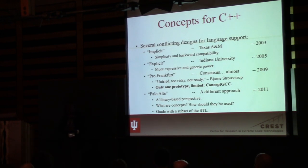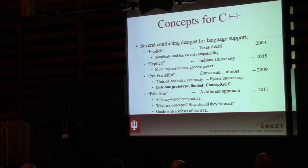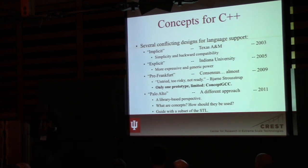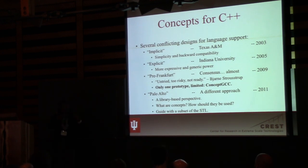The point was to look at this from the perspective of the library designer: what are concepts, how should they be used, how can you exploit them to design good libraries? We came up with a set of guidelines — for example, it doesn't make sense to have concepts without semantic content. We focused on a specific subset of the STL as a guide. The Palo Alto concepts were so focused on how to use them that they didn't address the language mechanics — so as an implementer, I knew how to use it but not how to implement it.